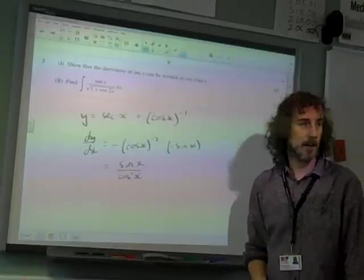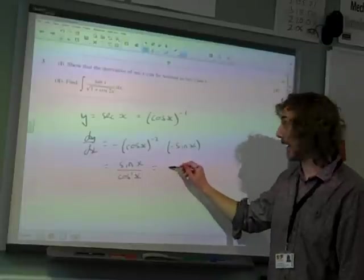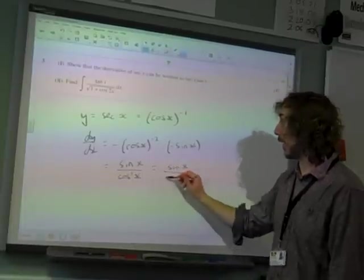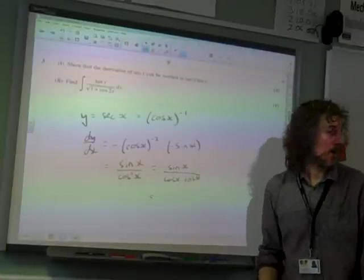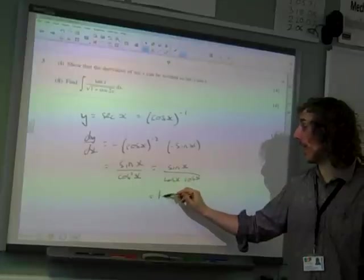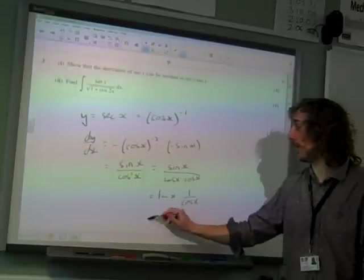Show it can be written as sec x tan x. So we now need to show it can be written like that. Well, that's just saying that's sin x over cos x cos x. And the sin x over cos x gives us a tan x. And then we've got 1 over cos x.